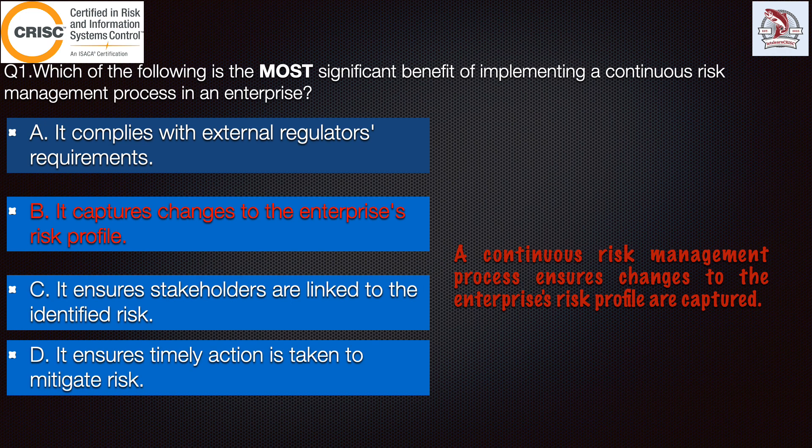Let's discuss the other options which are incorrect. Option A states: it complies with external regulators' requirement. This option is incorrect because complying with external regulators' requirement is not the primary aim. The aim of an ongoing risk management process is to accurately identify changes to the enterprise risk profile.